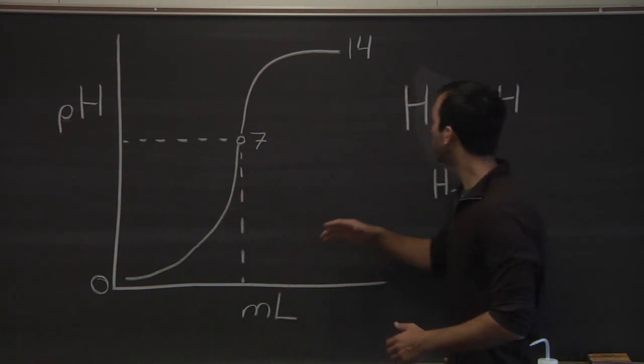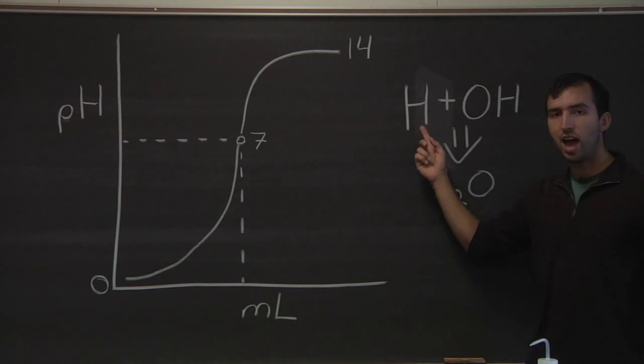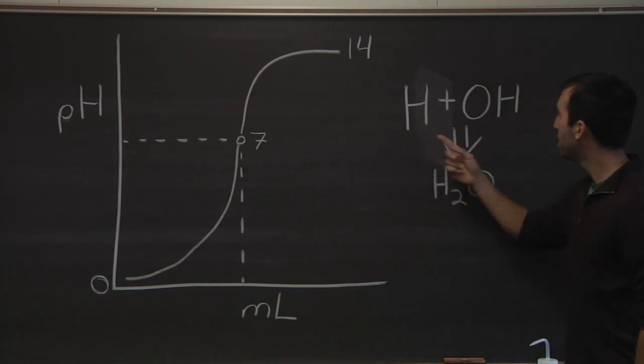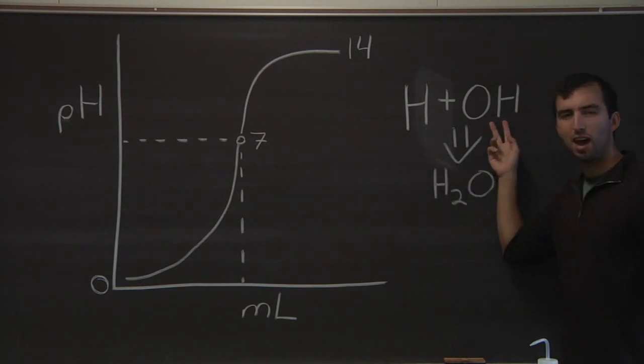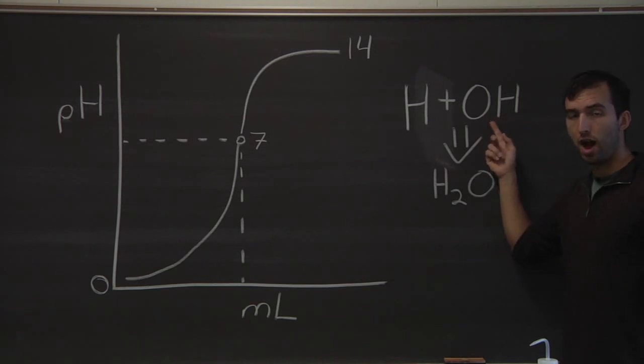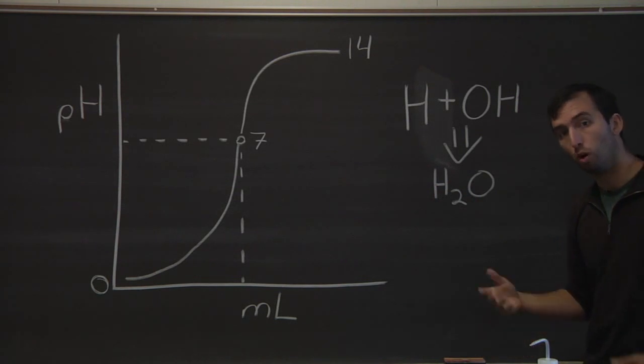So why does that happen? Well, remember acids have extra hydrogen ions and bases typically have extra OH ions. So when these two come together, they form H2O or water.